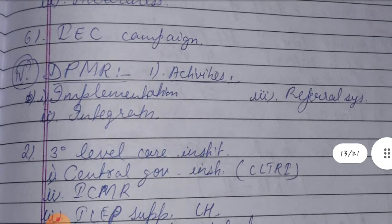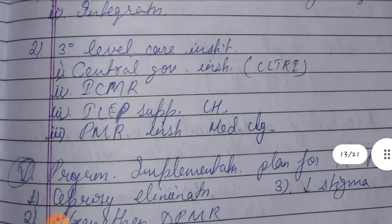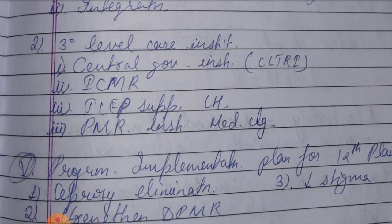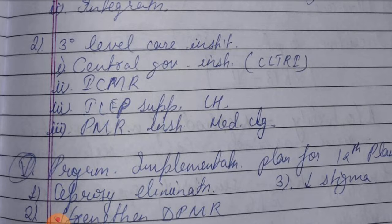Fourth, DPMR activities can be at first, second, and tertiary level care institutions. Disease Prevention and Medical Rehabilitation: first, activities implementation; second, integration; and third, referral system. Tertiary level care institutions include: first, Central Leprosy Training and Research Institute (CLTRI); second, ICMR institutes; third, IEP supported institutions; and PMR institutes or departments at medical colleges.